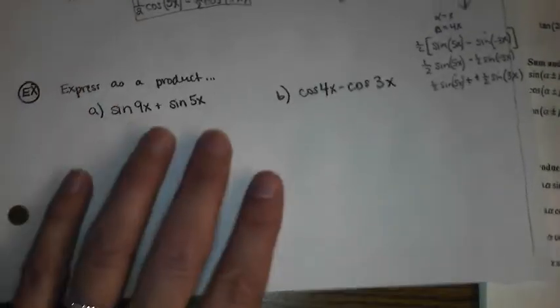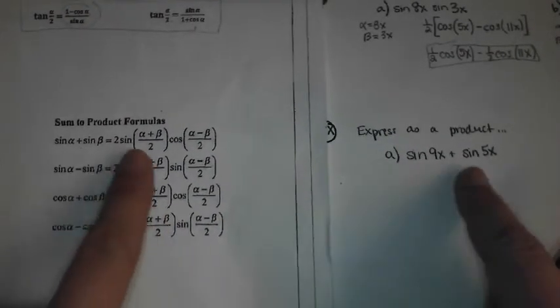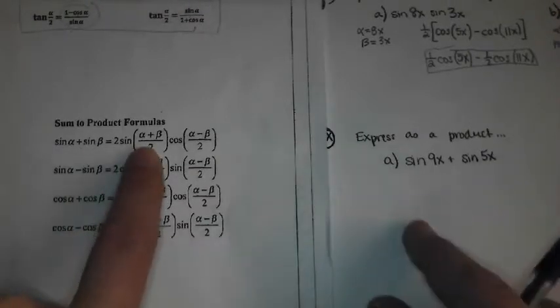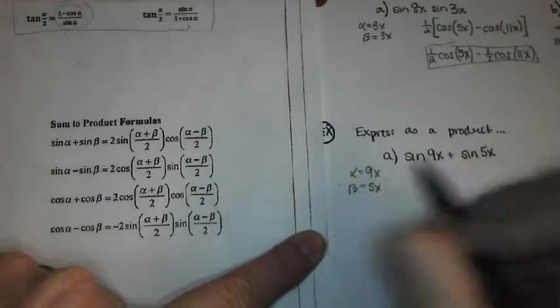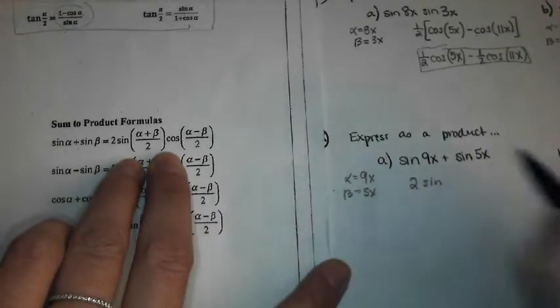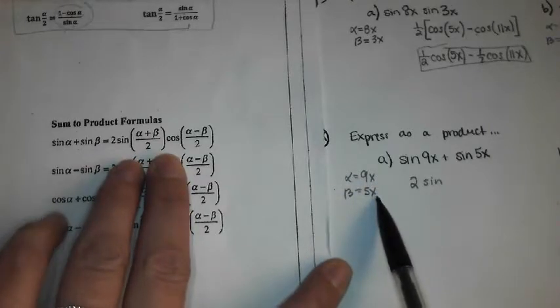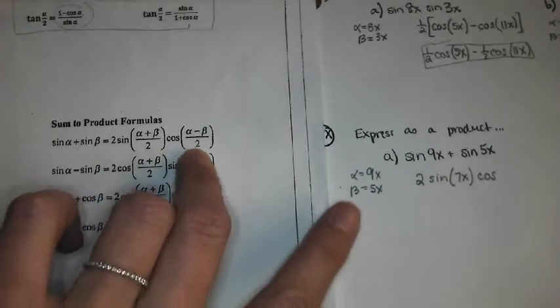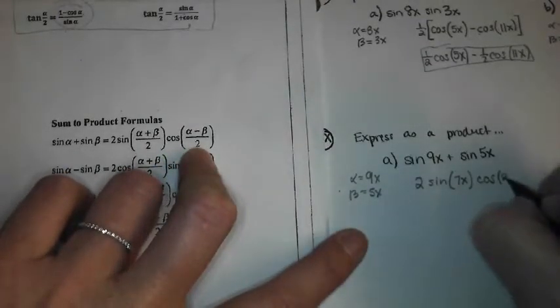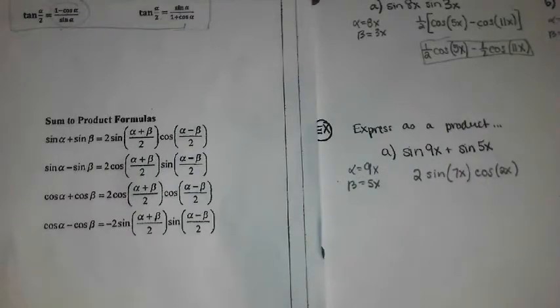All right, then these down here that start as a sum. So we have sine plus sine. So we're going over here. Sine plus sine is our sum to product equation number 1. What's our alpha? What's our beta? Okay. So our formula says 2 times the sine. What's alpha plus beta divided by 2? 7x. Cosine alpha minus beta divided by 2, that's 4x divided by 2, which is 2x. You decide what works for you, how much of that to do at once. But that's your answer.